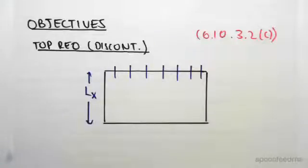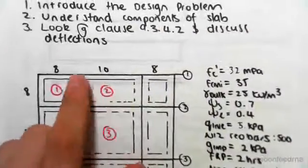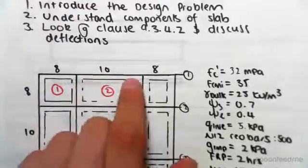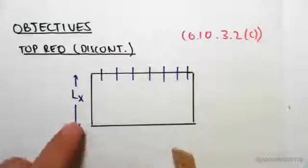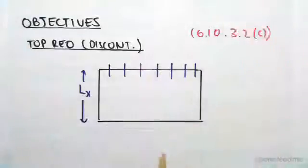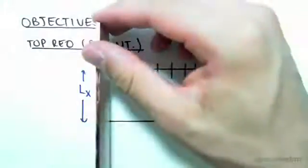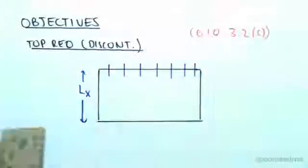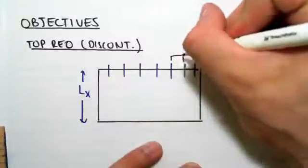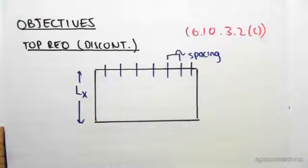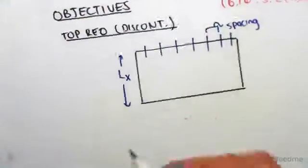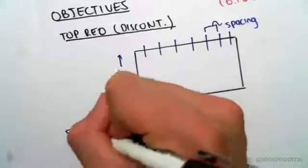The objective of this video is to find the top reinforcing at the discontinuous edge. We're looking at slab 2 — the slab discontinues along that edge. As redrawn here, we are looking only at the LX component. At that discontinuous top edge we're going to have reinforcing spanning in that direction, so all we need to find is this spacing, which spans the LX side.